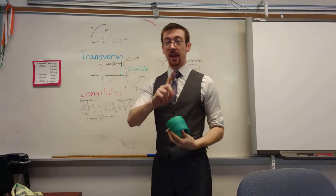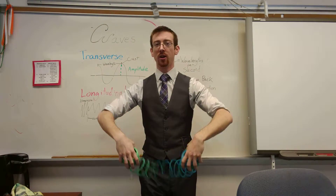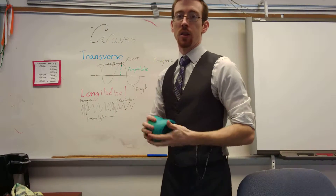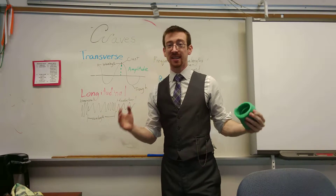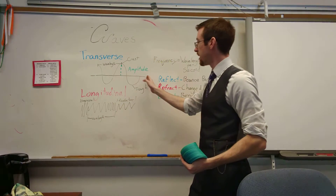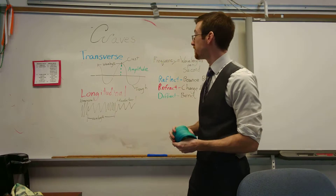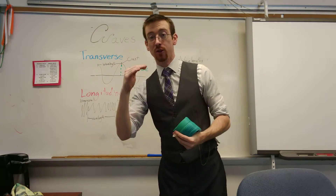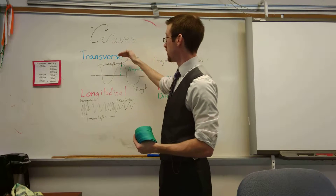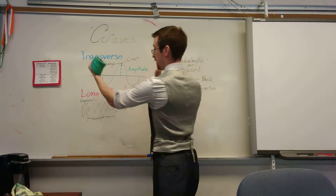One crest and one trough together make a wavelength — one whole wave is one up and one down. The number of wavelengths you have in a second is your frequency. So if this is one second and I have two waves, that's a frequency of two waves per second. Amplitude is how high it goes. So: amplitude, wavelength, crest, trough, frequency.